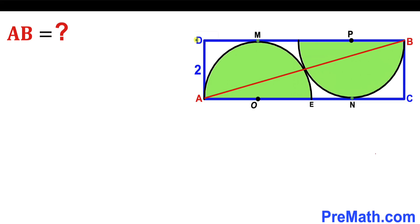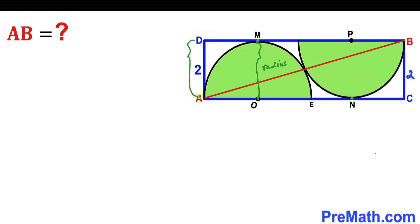We know that the side length of the blue rectangle is two units, so side BC is also two units. We can see that MO is the radius of the semicircle, and MO equals AD which is two. Therefore the radius of each semicircle is two units.